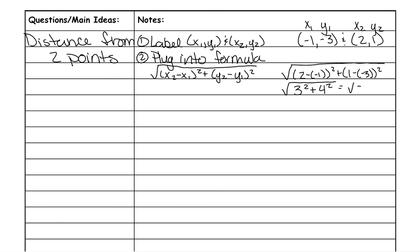3 squared is 9. 4 squared is 16. 9 plus 16 is 25. And when we take the square root of that, our distance is 5 units, which is exactly what we found from the graph from before.